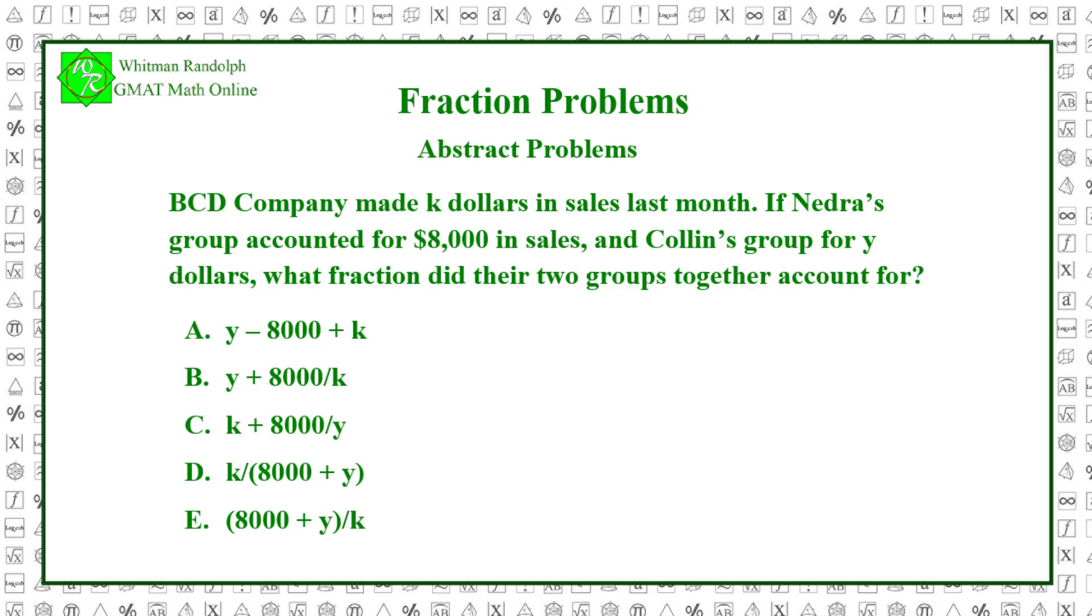When the problem asks what fraction, it means what fraction of the K dollars in sales BCD made. Therefore, K is the denominator of the fraction. Nedra's group made $8,000 and Colin's made Y. So the numerator is $8,000 plus Y. That is, the fraction of BCD's sales accounted for by these two groups is $8,000 plus Y over K. So the correct answer is E.